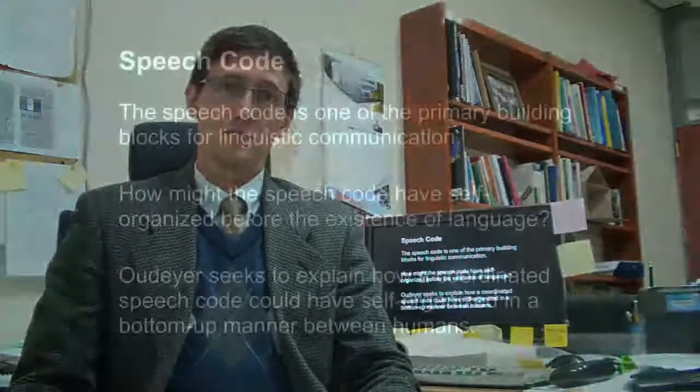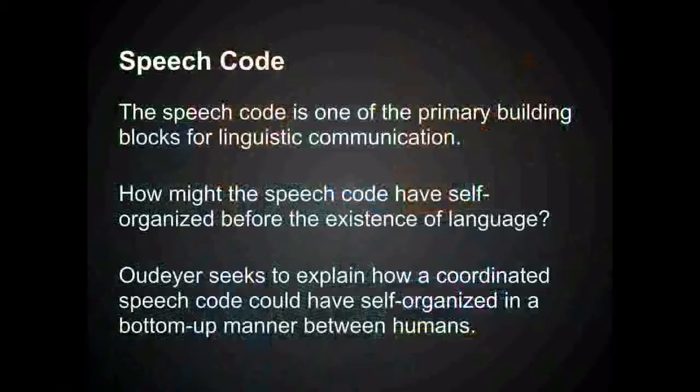So the human speech code is this mutually shared phonetic system of mutually shared phonetic sounds. And it is one of the primary building blocks of human language. And in his work in the self-organization of speech, Pierre E. Odair seeks to explain how a coordinated speech code could have emerged between humans before there was any established linguistic system or any established linguistic communication. So how could this have organized itself without the express intent of providing some kind of linguistic system, and without the existence of a linguistic system? Really interesting stuff.